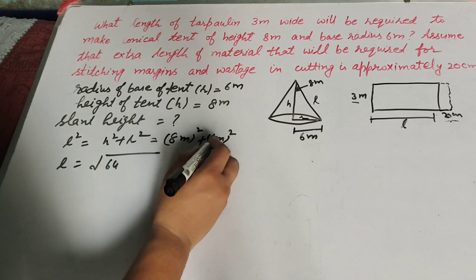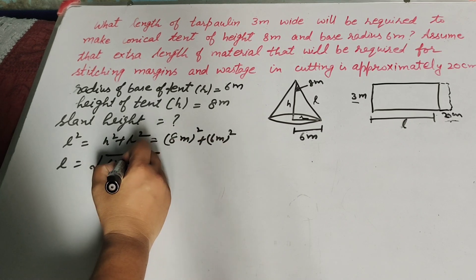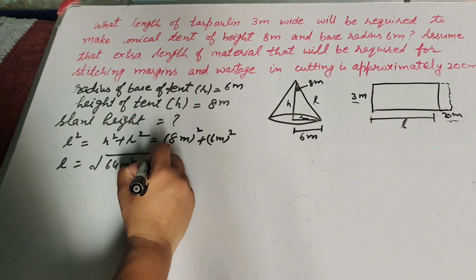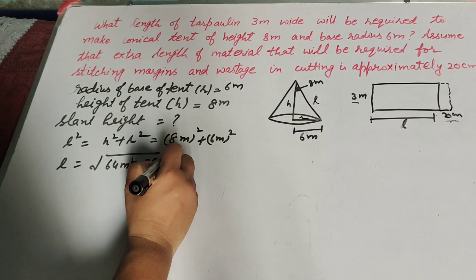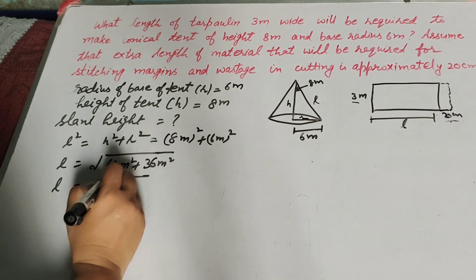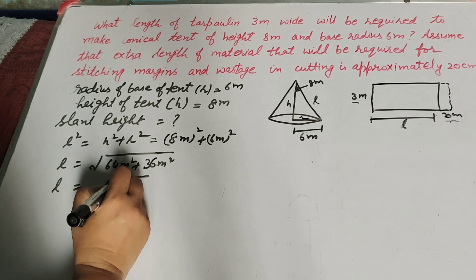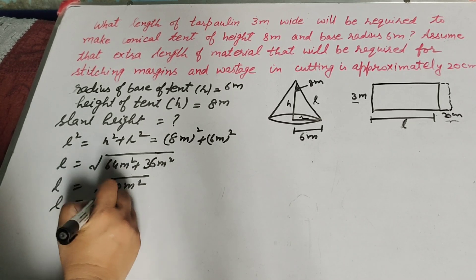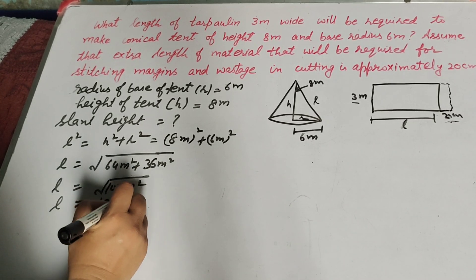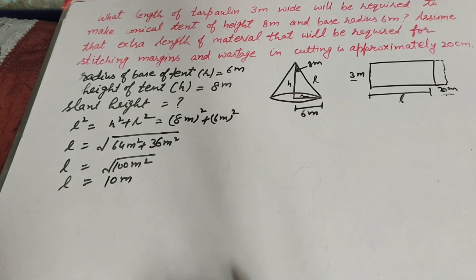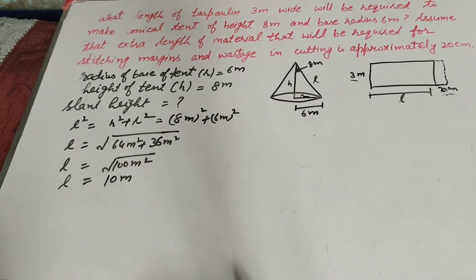So l is equal to the square root of 8 meter squared plus 6 meter squared. 8 meter squared is 64, plus 6 meter squared is 36, so l equals the square root of 64 plus 36, which equals the square root of 100. Therefore l equals 10 meter — the slant height of the tent is 10 meter.